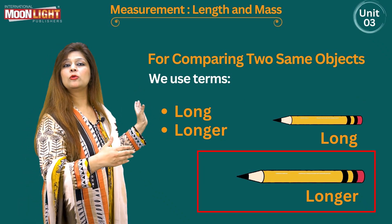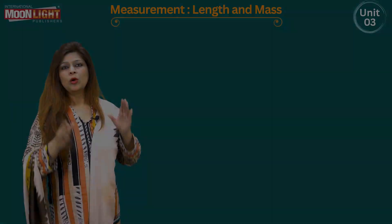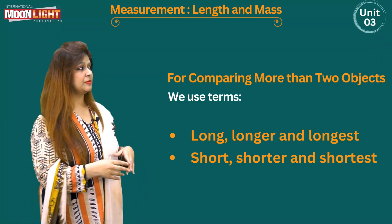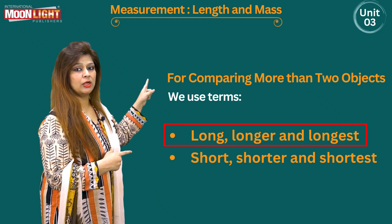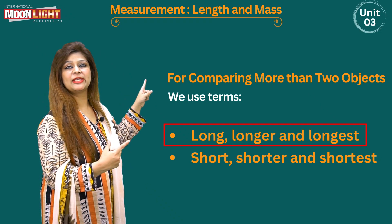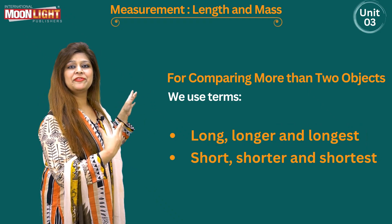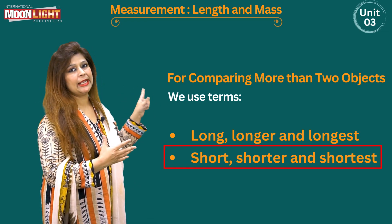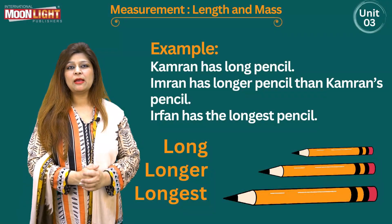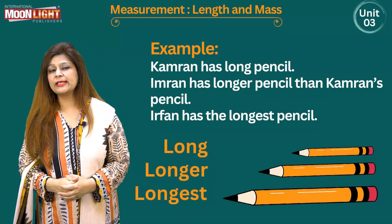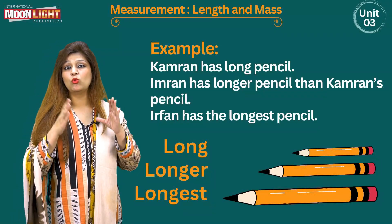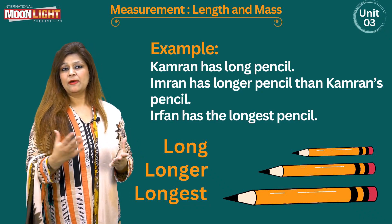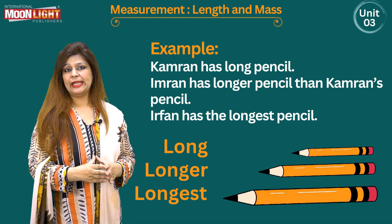For comparing more than two objects, we use the terms long, longer, and longest if the object is long. If the object is short, then we use the terms short, shorter, and shortest. Let's solve an example of long, longer, and longest, where we are going to take three objects.